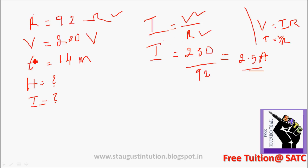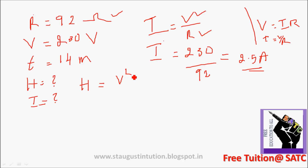Current is equal to I, R and T. H is equal to I squared R T. We can find heat using the equation H equal to V squared T by R.